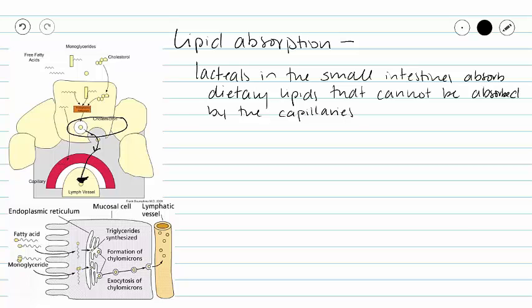These lacteals take up the chylomicrons and put them into circulation with the rest of the lymph. As our lymph drains into our subclavian veins, those chylomicrons can then travel through our bloodstream to our liver for processing. They cannot be absorbed by the capillaries in the small intestines, so our lymphatic vessels called lacteals in the small intestines are in charge of lipid absorption.